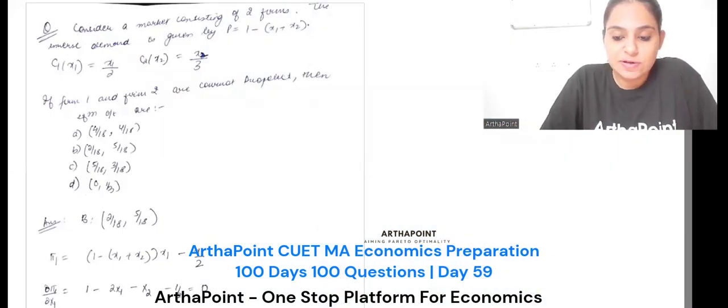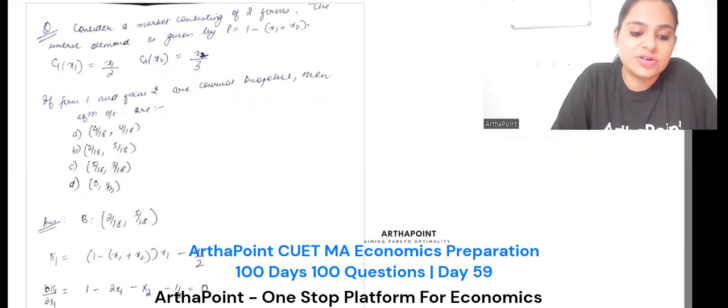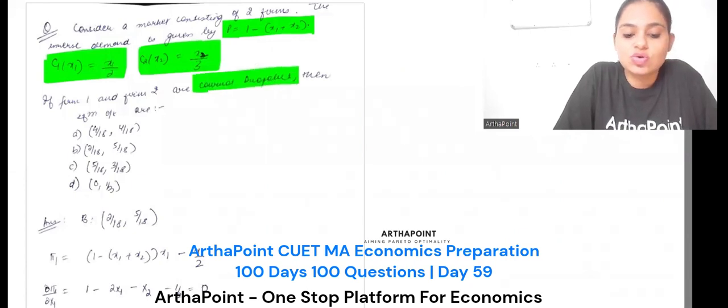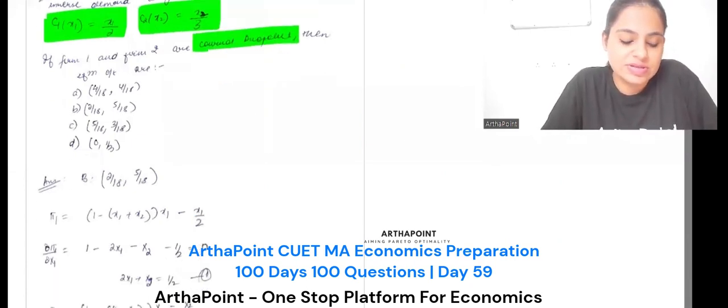Read this question. Try to do it yourself first. Consider a market consisting of two firms. You're given the price function and the cost function. And it is Cournot. Just find the equilibrium. Very simple.